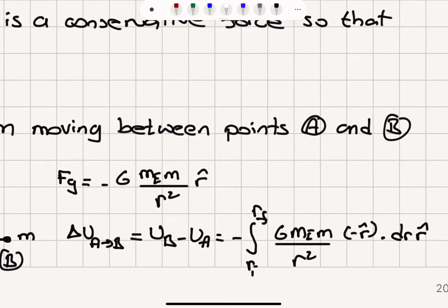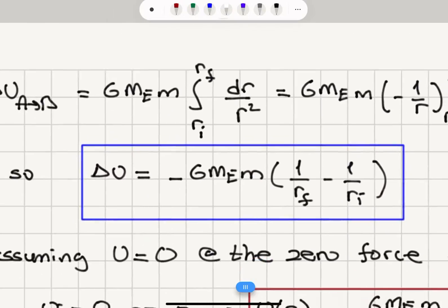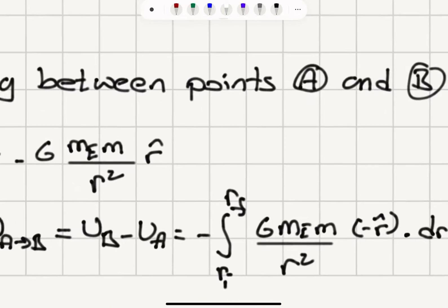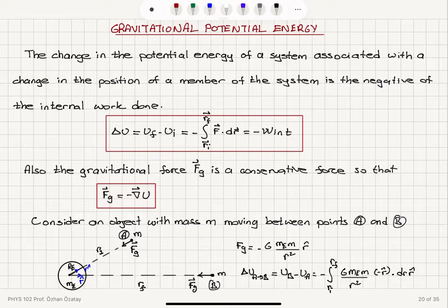Because gravitational force is a conservative force, the change in potential energy in going from point A to point B is final potential energy U_B minus initial potential energy U_A, which is minus the integral from r initial to r final of the force — G times mass of the Earth times m over r squared in the minus r-hat direction — dot product with displacements dr r-hat. This gives us G M_e m times the integral from r_e to r final of dr over r squared.